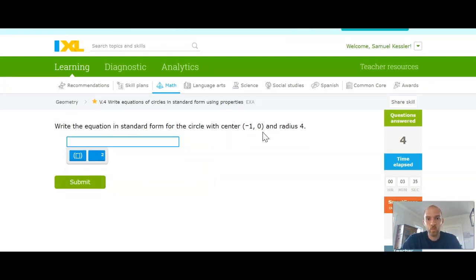The center is at negative 1 comma 0 and the radius is 4. So again, it's x minus the x coordinate. So it would be x minus a negative 1. That looks bad to have two negatives there. We know two negatives makes a positive. So x plus 1 squared plus y minus 0 squared, that's just going to be y squared, equals the radius squared. 4 squared is 16.